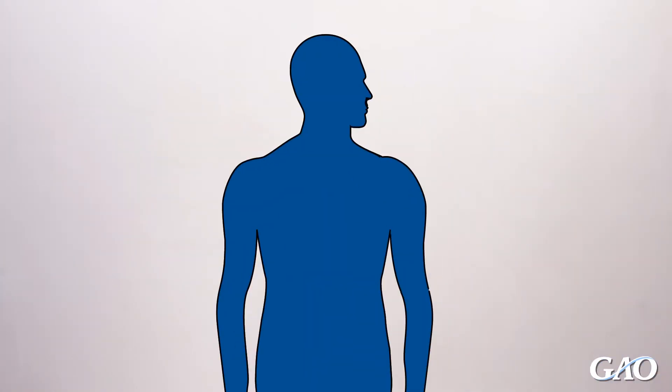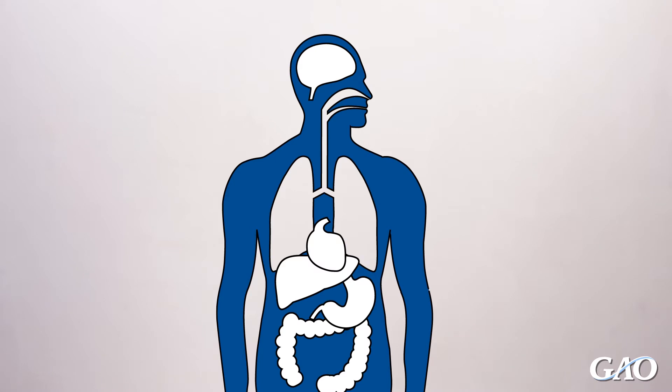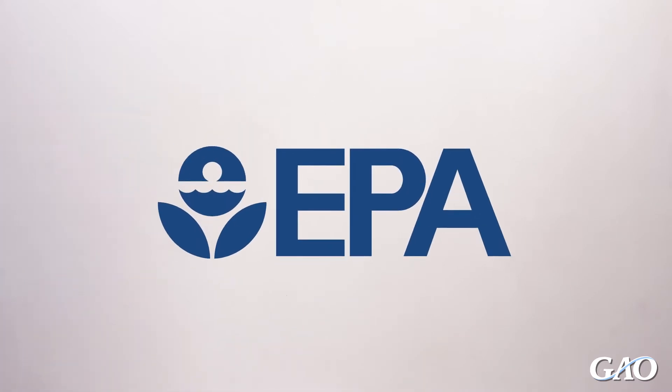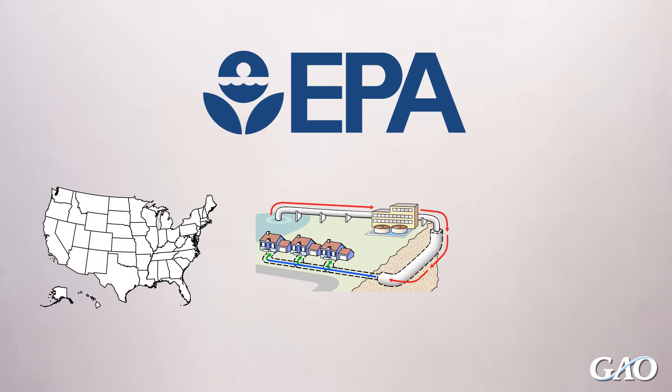Public health agencies have determined that no level of lead is safe for consumption. The Environmental Protection Agency works with states, water systems, and others to ensure that water is routinely tested for lead and treated when necessary.